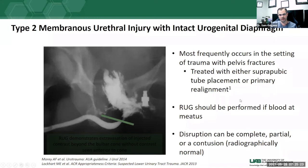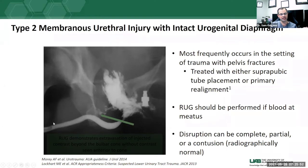Urethral disruption can be complete — very obvious when the urethra is totally disrupted; partial — leaking but the urethral lumen can still be traced to the bladder; or a contusion, which is radiographically normal. Contusions are treated very conservatively, so it's not critical we identify them. Complete and partial disruptions are the important findings. The retrograde urethrogram is considered the best initial study for evaluating urethral injuries, urethral strictures, and urethral fistulas.